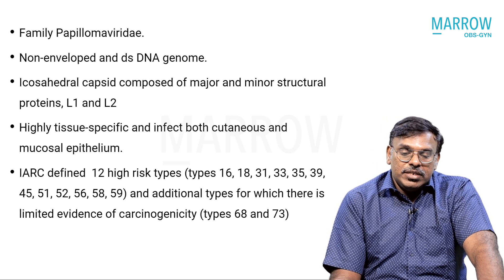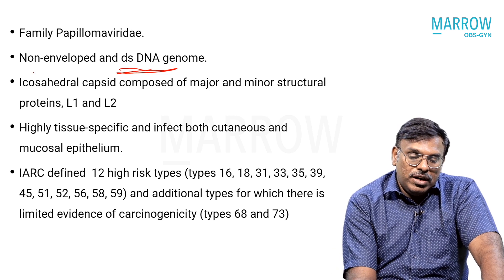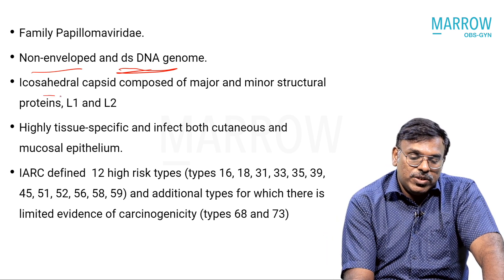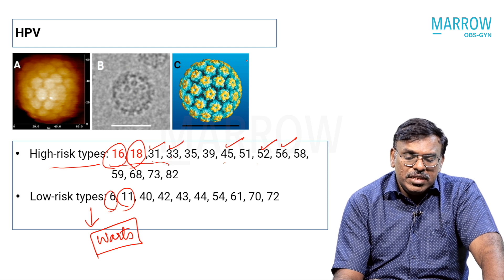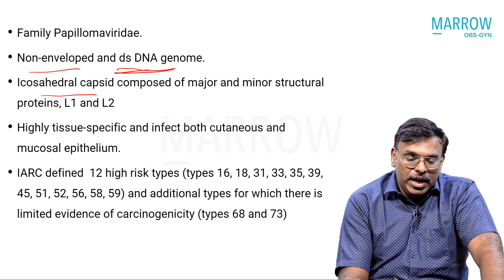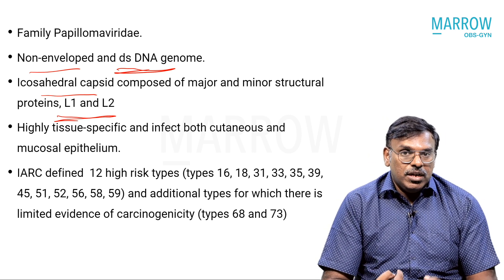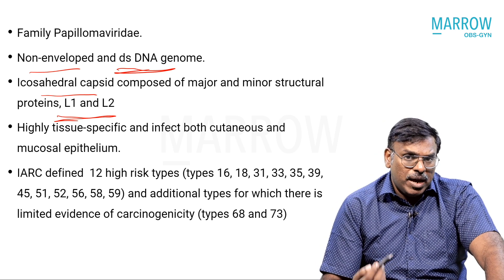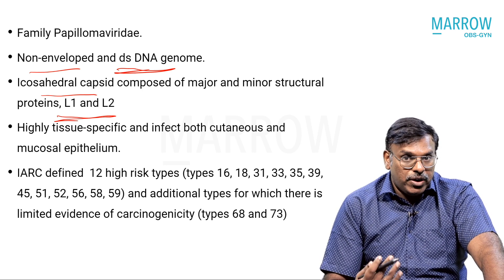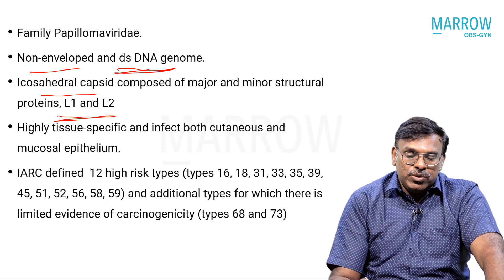HPV belongs to the family Papilloviridae — the human papillomavirus — and it is a double-stranded DNA virus. The DNA is non-enveloped, but the entire virus is covered by a structure known as the capsid — specifically an icosahedral capsid. This capsid is composed of both L1 and L2 structural proteins. L1 is the major capsid protein and L2 is the minor protein, which gives the subtype differences to the capsid surface. L1 is also utilized in the production of vaccines.